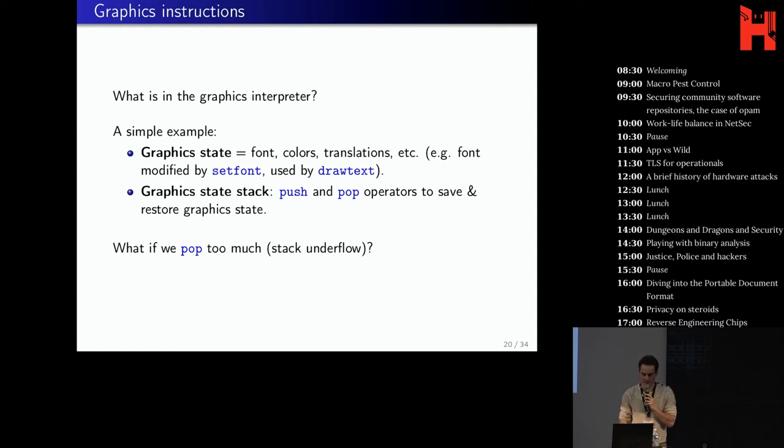I was trying to write actually a PDF optimizer to just simplify the document. And I found this document, which is really weird because on the preview, you can see something. But here, the document is completely broken. So can we understand that? Well, what's in the graphics interpreter of PDF? I will give you just a simple example of what could possibly go wrong. So you have the graphic state, which stores like the fonts, the color, the current translation, et cetera. So the state can be modified, for example, with the set font operator. You modify the current font. Then some operator will read this state. So draw text will read the current font and the current color to draw the text.